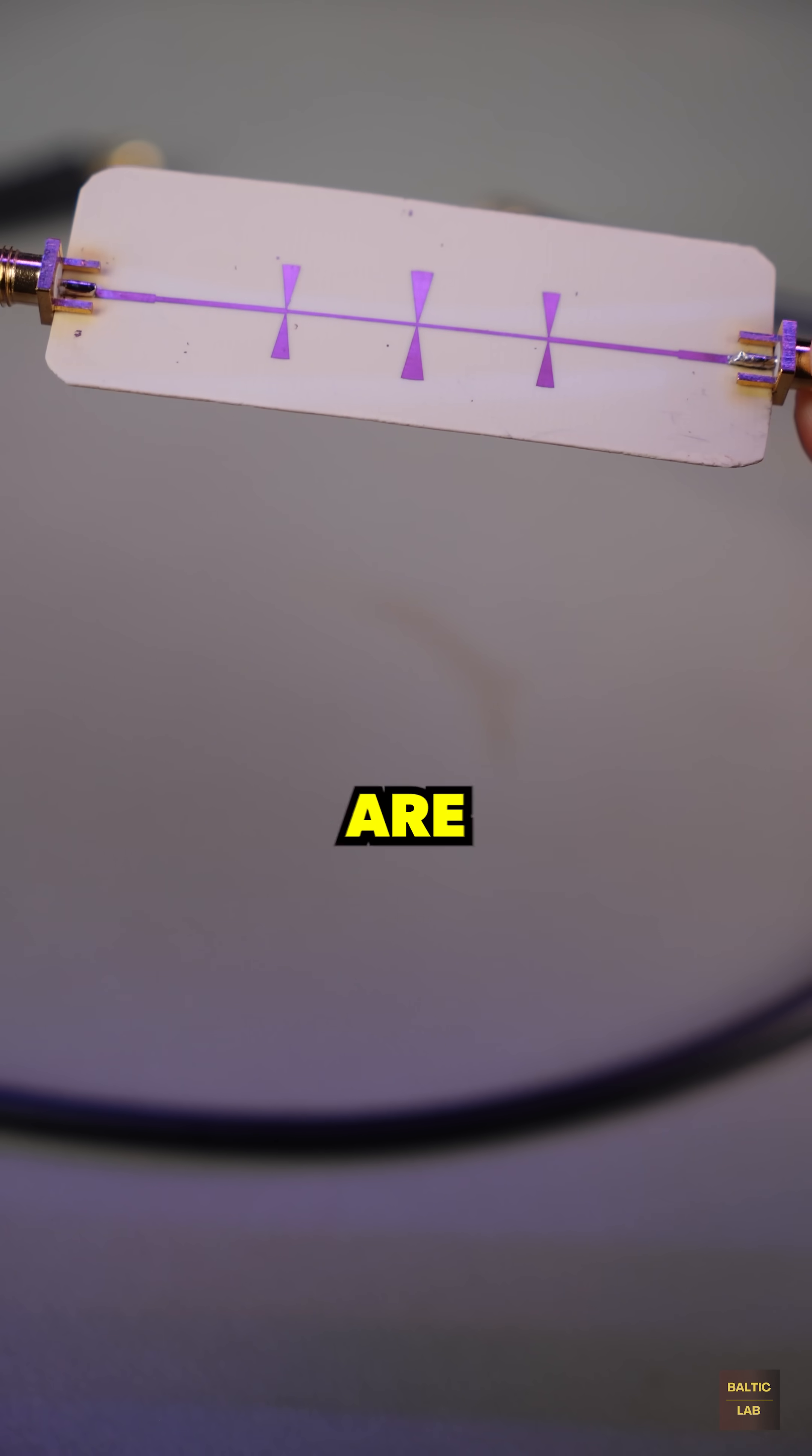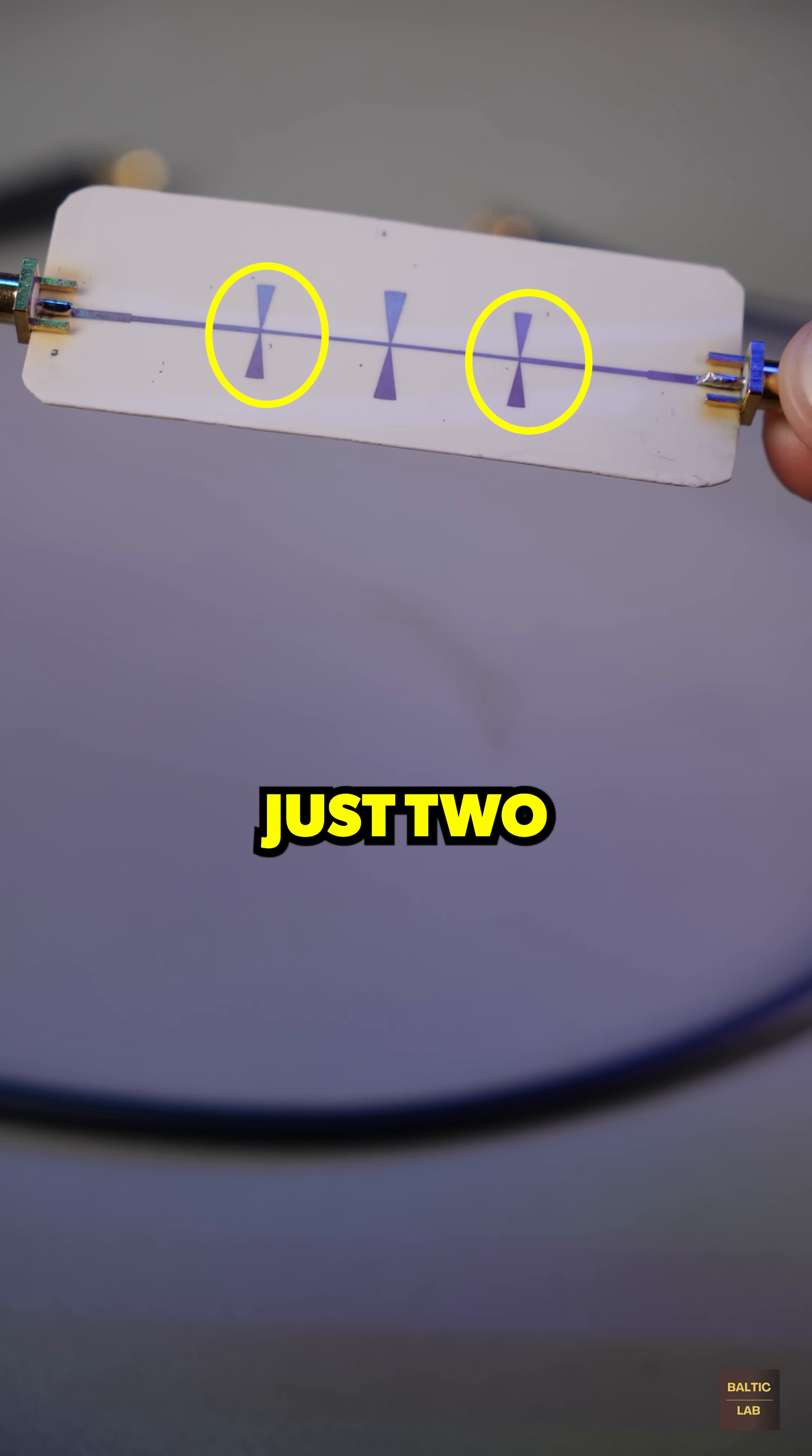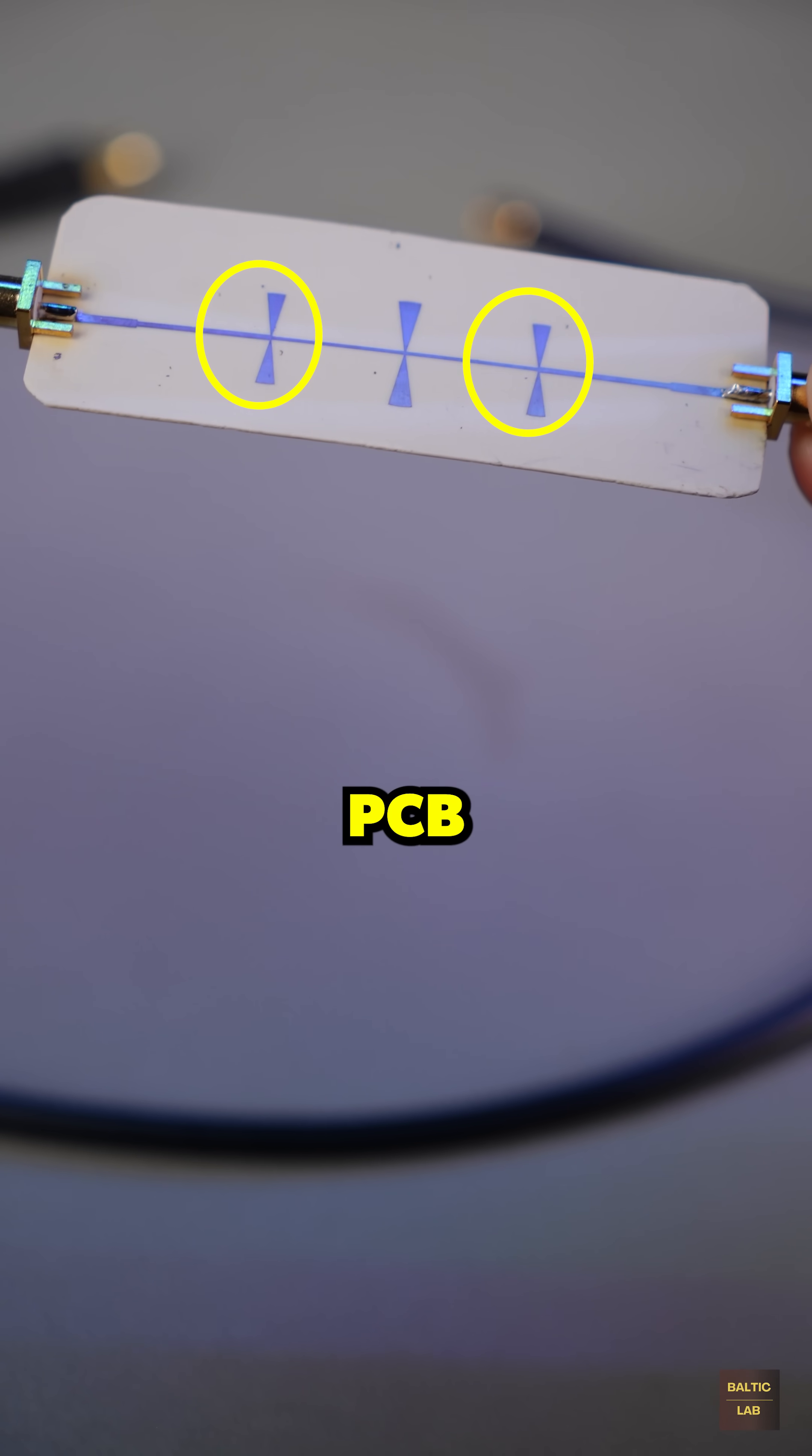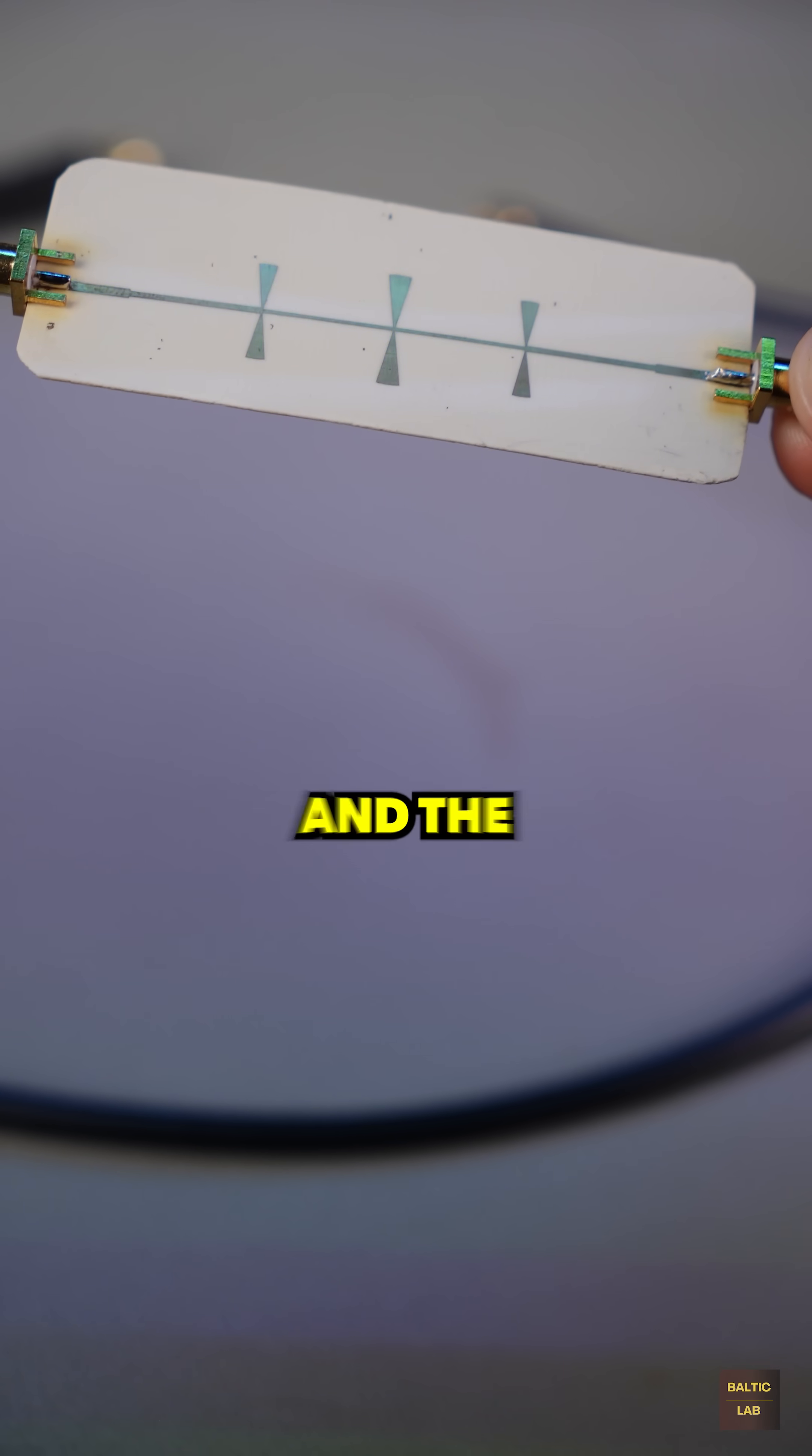The three elements you see are so-called butterfly stubs. The two capacitors are pretty straightforward. Just two copper areas with the PCB material acting as the dielectric in between the structure and the ground plane.